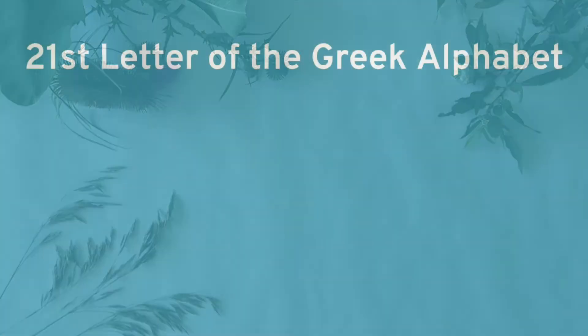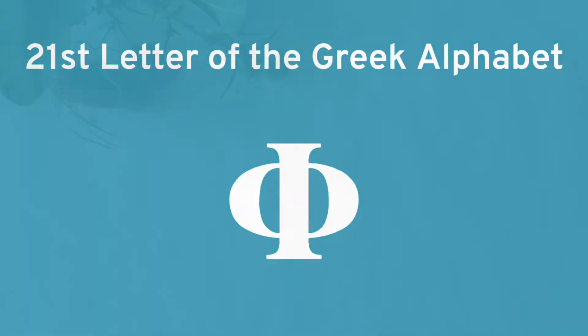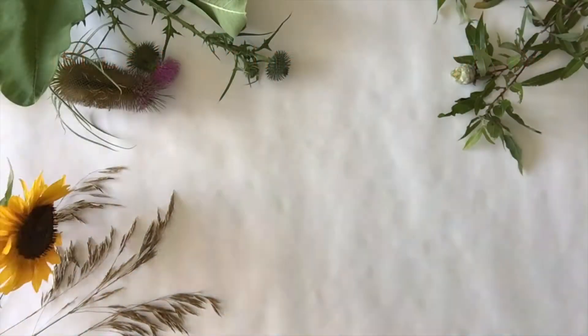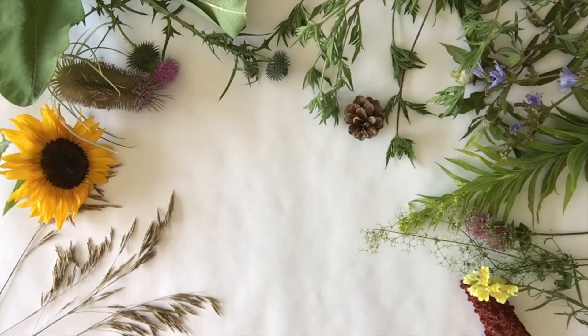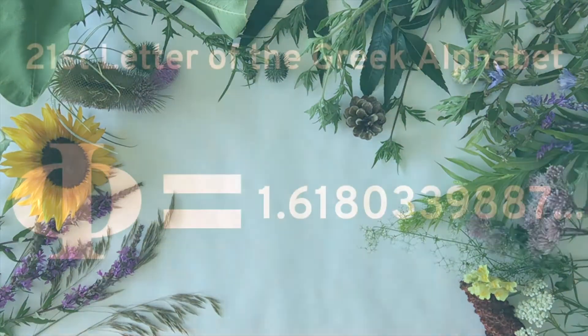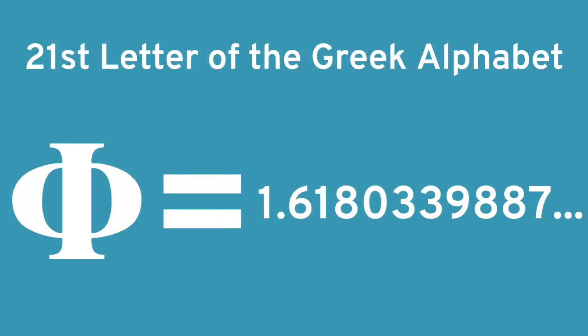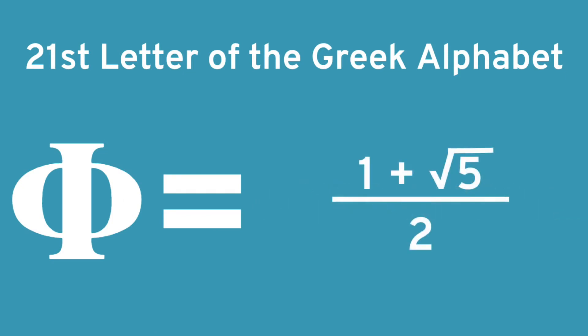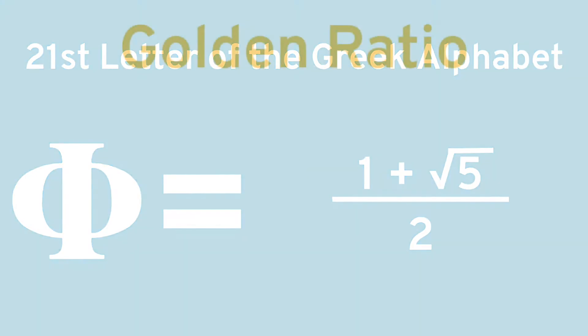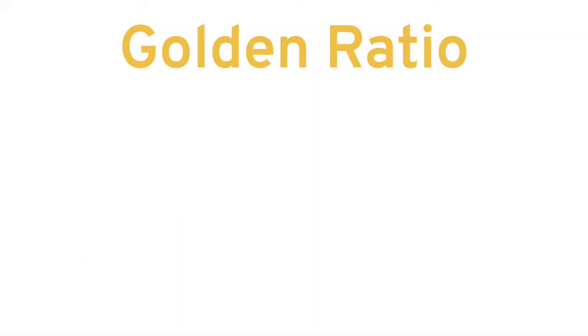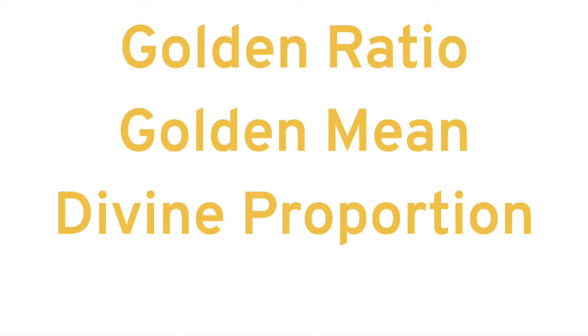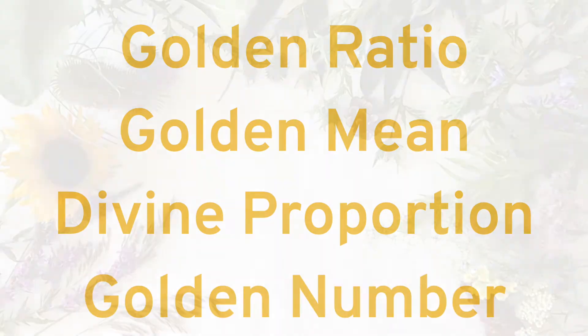You've been considering the 21st character of the Greek alphabet, phi, and how it relates to math and nature. Phi is not only a letter, but also an irrational number which starts 1.618 without ever repeating. You can also write phi as 1 plus the square root of 5 divided by 2. This number is called many things and may be referred to as the golden ratio, golden mean, divine proportion, golden number, and many more.